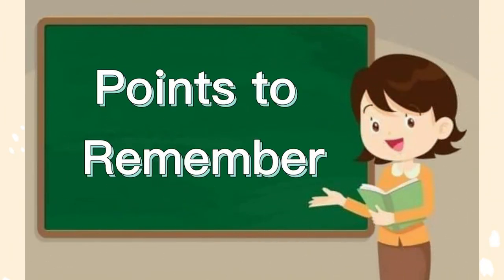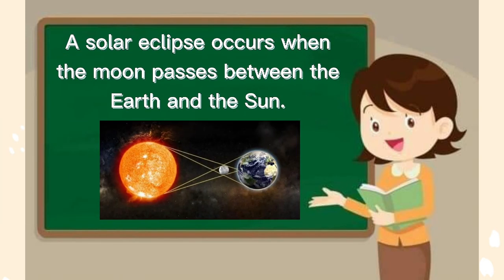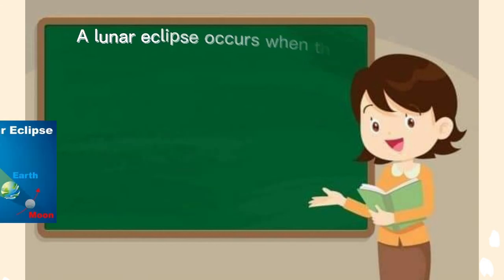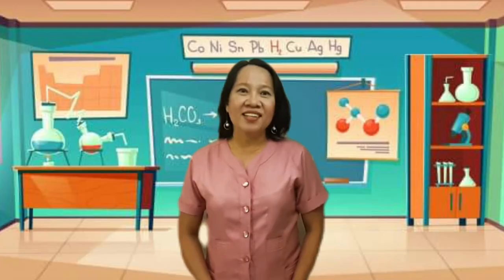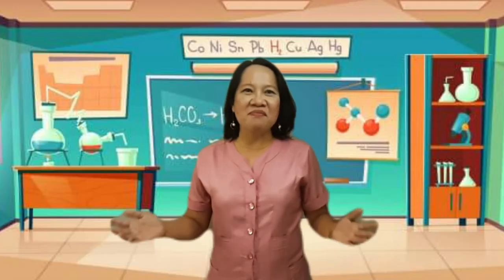Some points to remember: A solar eclipse occurs when the moon passes between the earth and the sun. A lunar eclipse occurs when the earth comes between the sun and the moon.